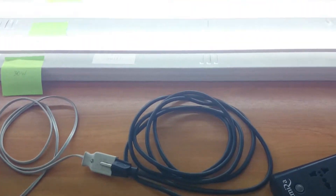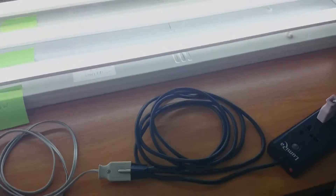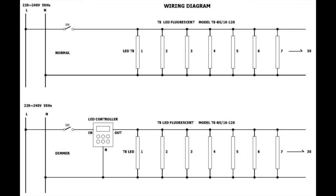It's very easy for installation. You can simply have this device installed at the beginning of your light segment — for example in the distribution box — and you can suddenly control the power and brightness of all your lighting.